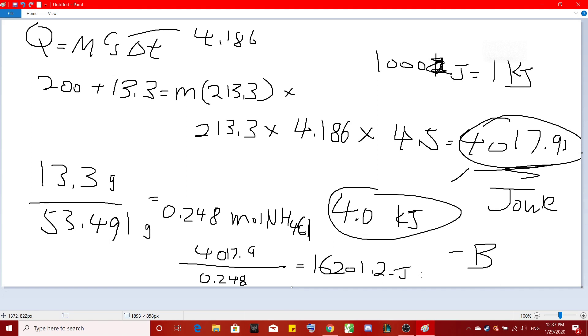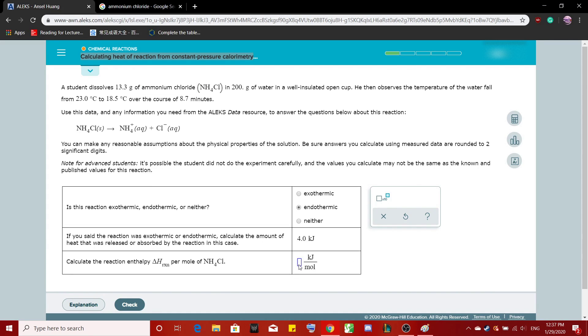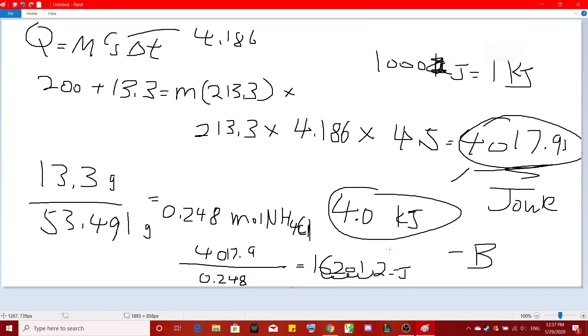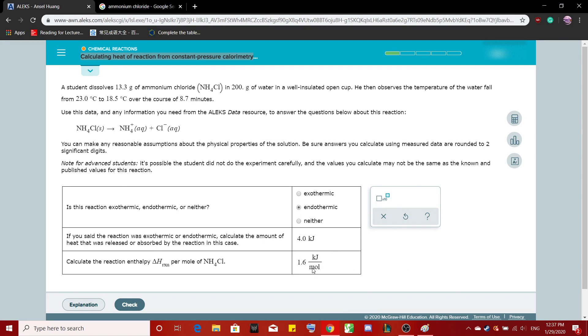Now, keep in mind, this is in joules. ALEKS wants KJ, kilojoule. So we're just going to move decimal places, four spaces. 1, 2, 3, 4. So it's 16 KJ. I'm sorry, 16. My bad. 16.